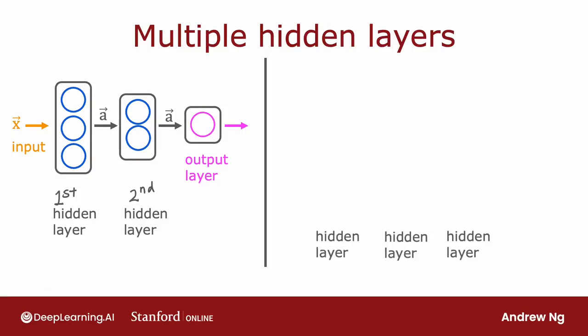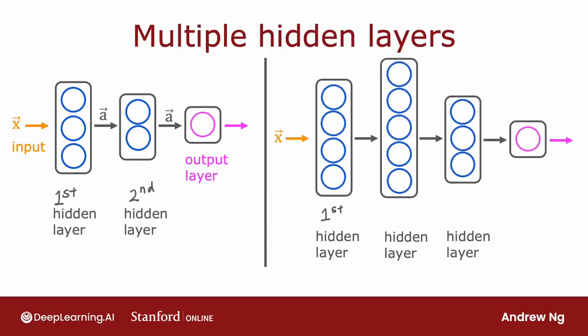Here's another example: a neural network whose input goes to the first hidden layer, then to the second hidden layer, then to the third hidden layer, and finally to the output layer. When you're building your own neural network, one of the decisions you need to make is how many hidden layers you want and how many neurons each hidden layer should have. This question of architecture can have an impact on the performance of your learning algorithm, and you'll learn later in this course some tips for choosing an appropriate architecture.